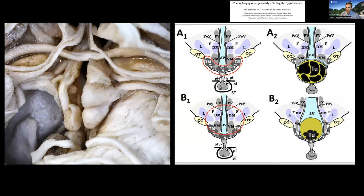For tumors that are purely intraventricular we do not want to operate endonasally, because the floor of the third ventricle will still be intact. But those that are tuberoinfundibular have hypothalamic tissue around them, and we need to identify what hypothalamic tissue surrounds us and how to dissect it safely. In this case, the ventromedial nucleus is going to be at risk, but the arcuate nucleus is the one that will be destroyed by tumor, and I'll take advantage of that when accessing the area through the endonasal approach.